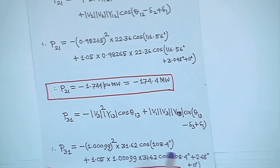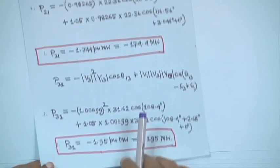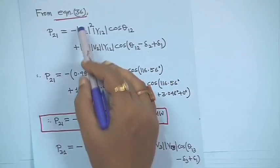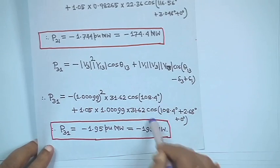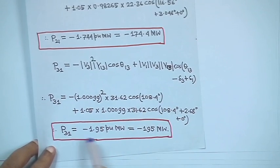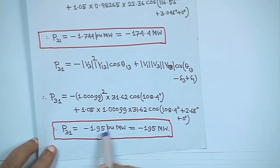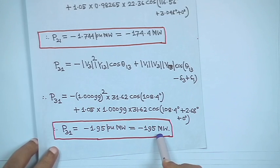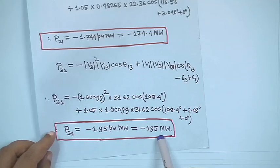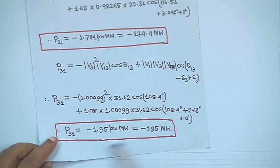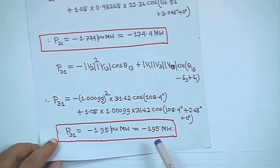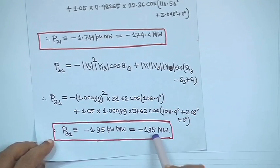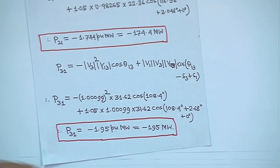Similarly, P₃₁ uses the same equation 36 with k equal to 3 and i equal to 1. Putting all the parameters, P₃₁ will become minus 1.95 per unit, that is minus 195 megawatt. The actual direction of power flow is from 1 to 3 because the minus sign is coming.